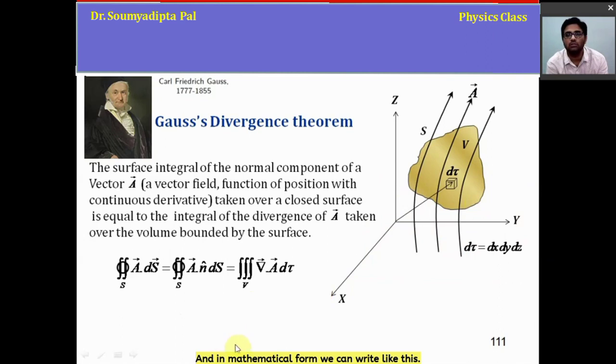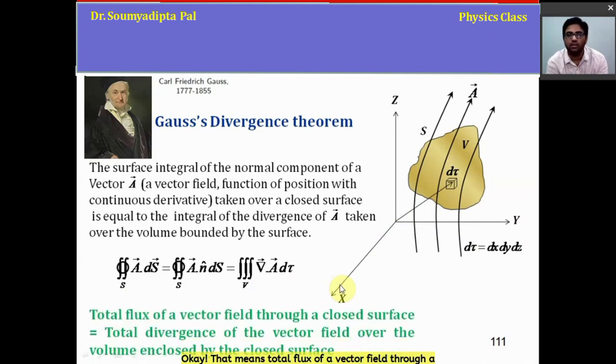In mathematical form we can write like this. That means the total flux of a vector field through a closed surface equals the total divergence of the vector field over the volume enclosed by the closed surface. This is the divergence theorem of Gauss.